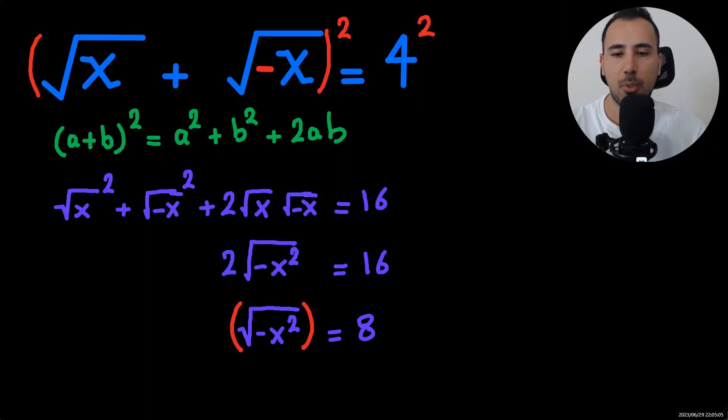So we're going to square both sides again by 2 to get rid of this radical. So negative x squared is equal to 64. So x squared is equal to negative 64. Again, let's find the square root of both sides.